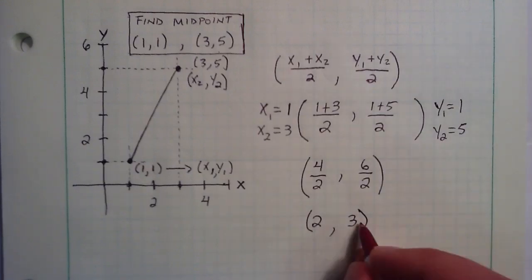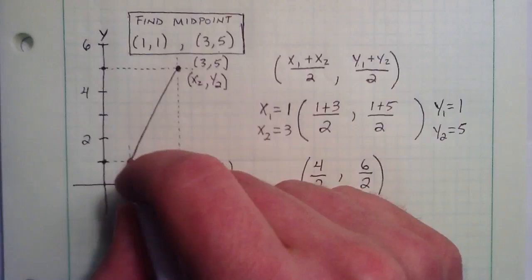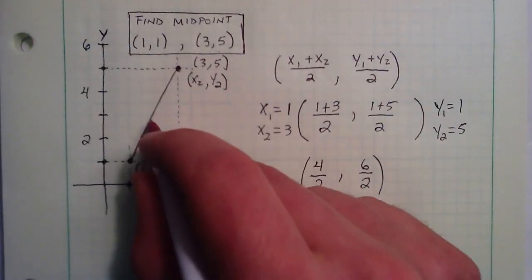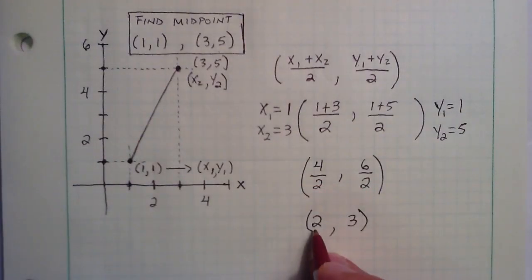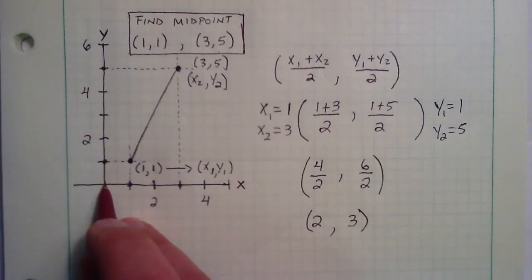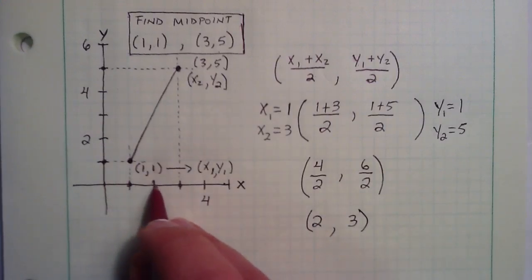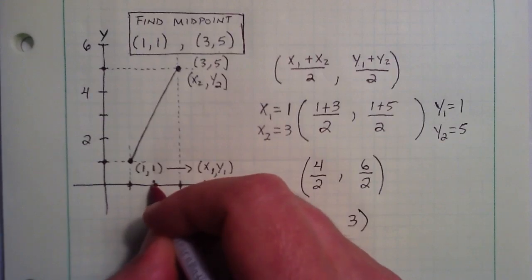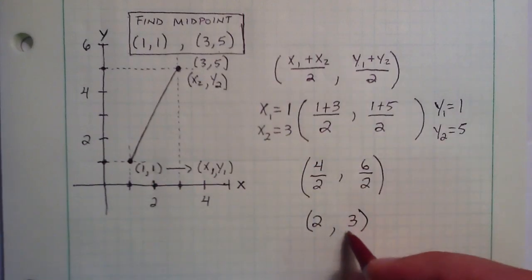And so this is going to be the point directly between these two points, or in the center of this line segment. So let's go ahead and plot it. This has an x component of 2. So starting on the x-axis at 0, go over 1, 2, we'll just draw our little component dot here.